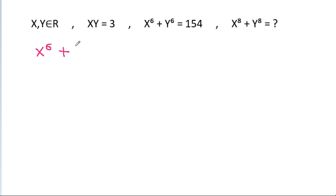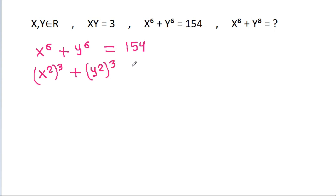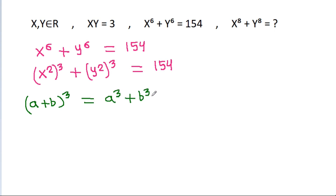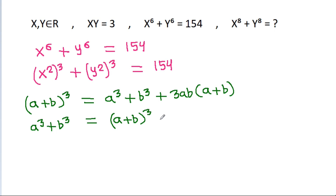We have x power 6 plus y power 6, which is x square cubed plus y square cubed, equal to 154. Using the identity a plus b cubed equals a cubed plus b cubed plus 3ab times a plus b, we get a cubed plus b cubed equals a plus b cubed minus 3ab times a plus b.